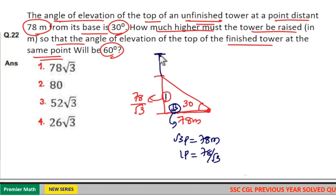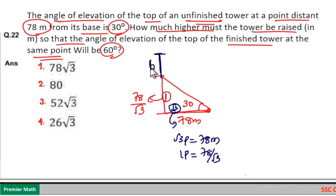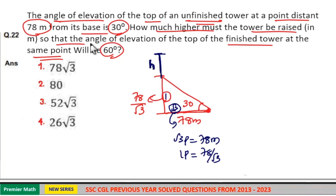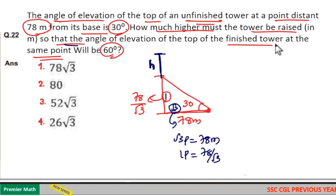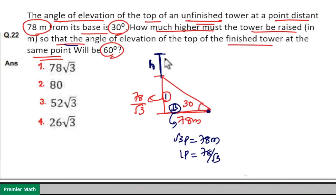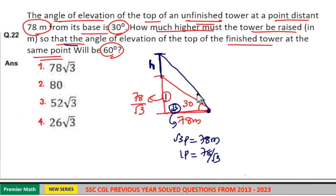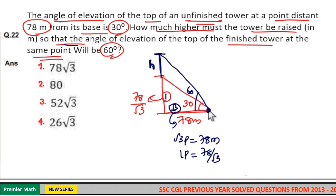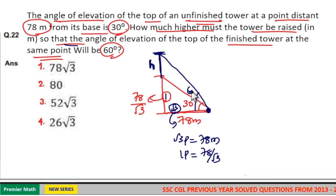This is the new height of the tower. We need to find how much it should be raised so that the angle of elevation of the top of the finished tower at the same point is 60 degrees — that is, from this point to the new height, the angle of elevation is 60 degrees. So we need to find H, the total new height.